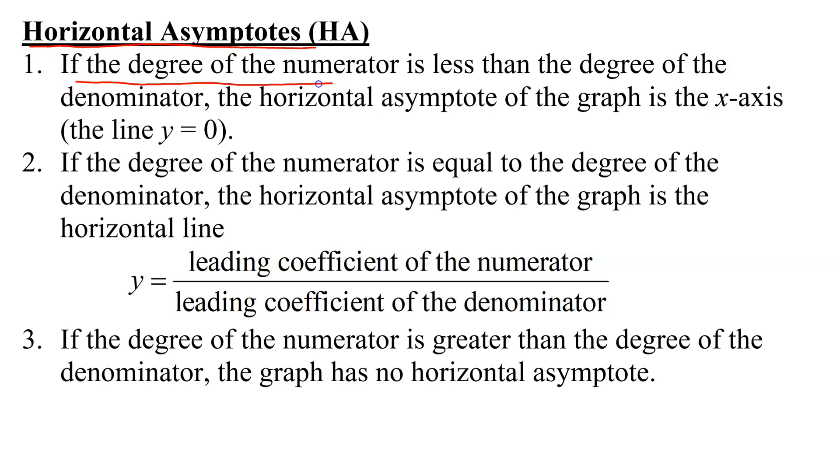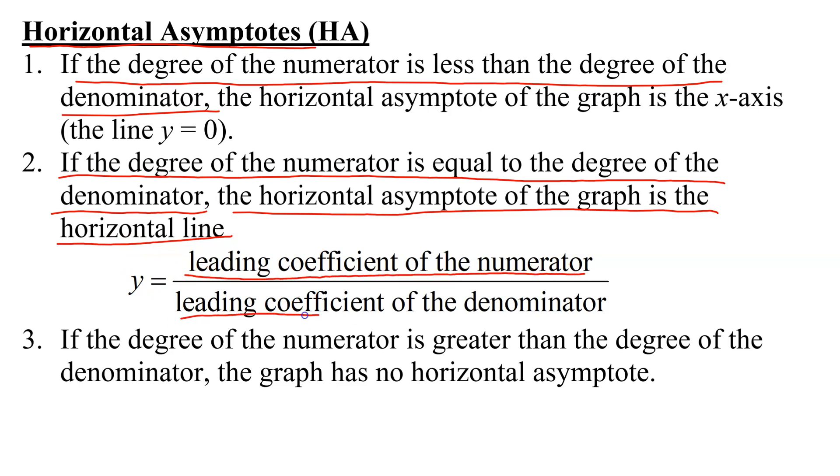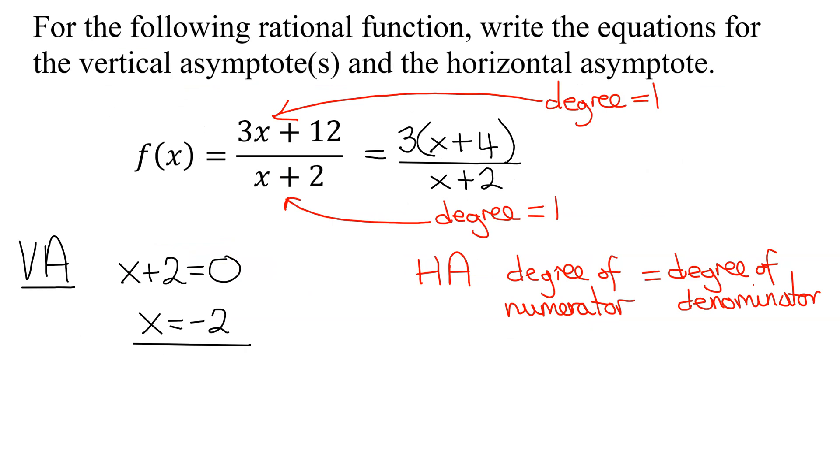The first one says if the degree of the numerator is less than the degree of the denominator. Not true in this case. Next one, if the degree of the numerator is equal to the degree of the denominator, that's what I have. The horizontal asymptote of the graph is the horizontal line y equals the ratio of the leading coefficient of the numerator divided by the leading coefficient of the denominator.